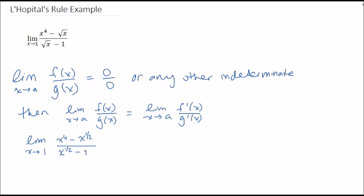This is x to the 1/2 minus 1. Now it is important to check: first we sub in the 1 and we got 1 to the fourth minus square root of 1 over square root of 1 minus 1, which is indeed 0 over 0.